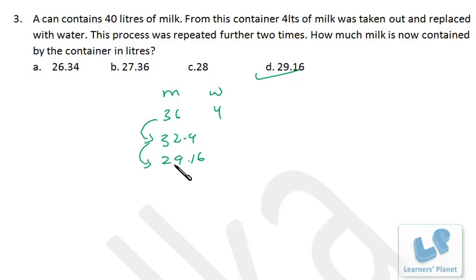Then also you just need to deduct 2.9 something, that is around 2.2, so it can be done very easily. Your answer must be 27 something. So without the use of formula also, this problem can be done simply.